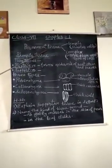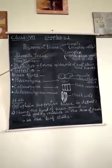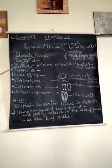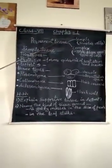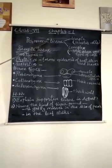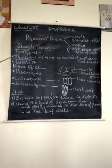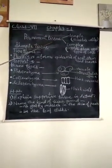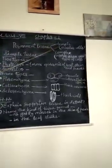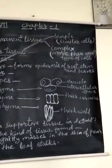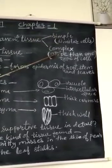When the division process is stopped in those cells or ceases permanently, they form permanent tissue. Permanent tissue is of two types: simple permanent tissue and complex permanent tissue.